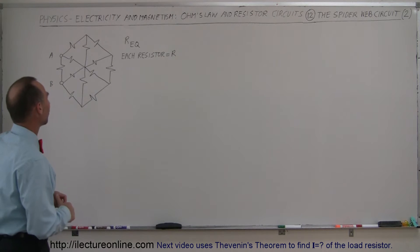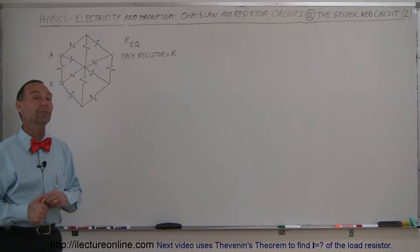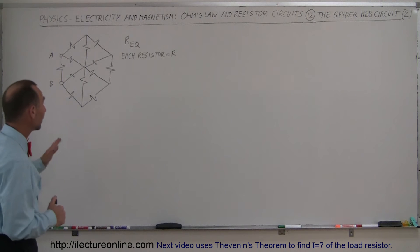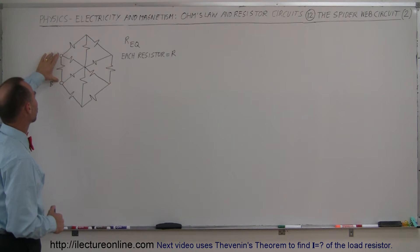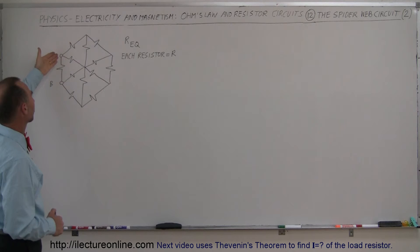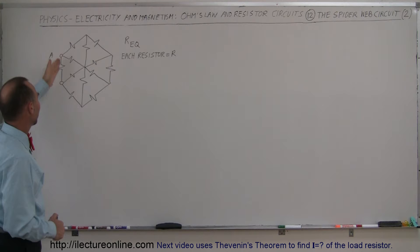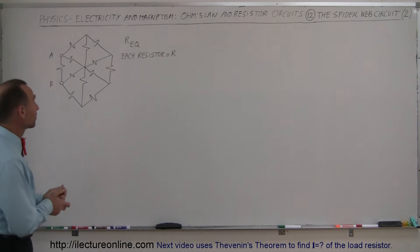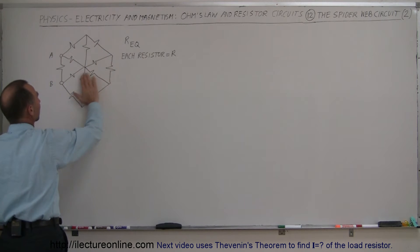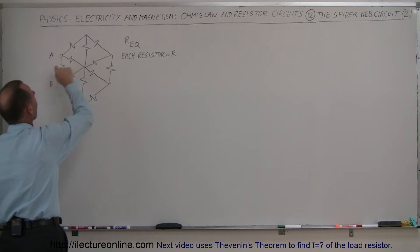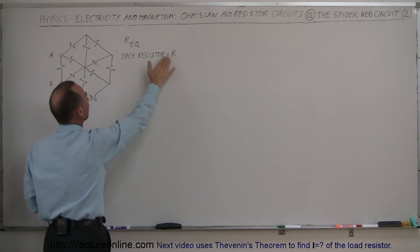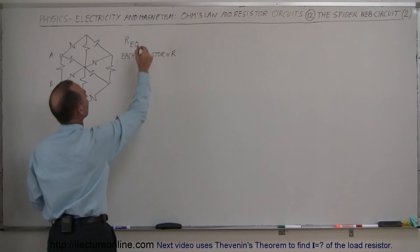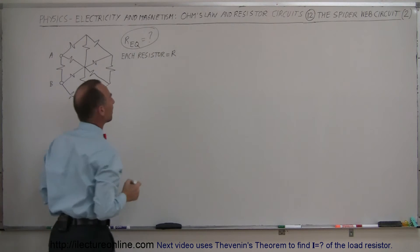Here we have another form of the very same spider web circuit. The difference between this one and the previous video is that the terminals are right here at two adjacent corners. We're trying to find the equivalent resistance from A to B going through the circuit. Each resistor has value R and we're trying to find the equivalent resistance of this circuit between terminals A and B.